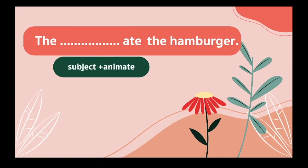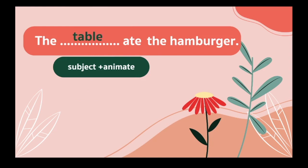For example, in the same sentence structure '_____ ate the hamburger,' the word that should fill the blank in order to prevent odd meaning should have the animate semantic feature. So we can add the word 'boy,' 'man,' or 'girl' here. But it cannot be the word 'table,' because the word table doesn't contain the required semantic feature of being animate.